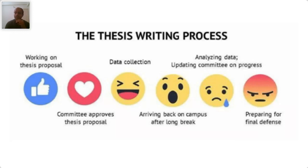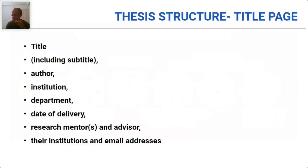Now let us start with the thesis structure. If the participants have seen any thesis, it has a definitive structure. The structure includes the title page, abstract, introduction, materials and methods, results, discussion, conclusion, acknowledgement, and references. This is a very standard format, universally applicable for any thesis. The first element is the title page, which is reflective of so many things — it reflects what you have done, where you have done it, and under whose guidance.